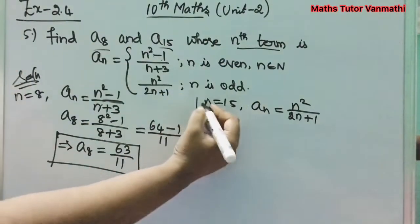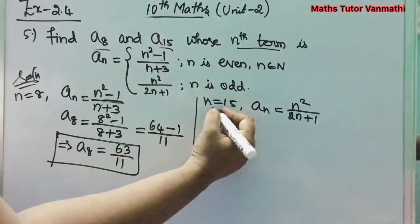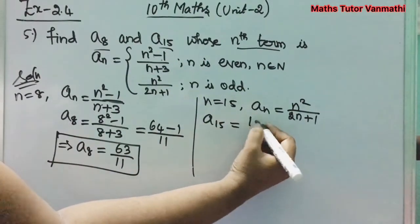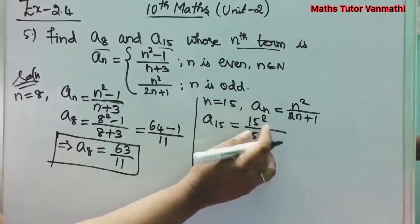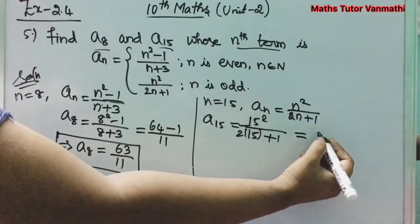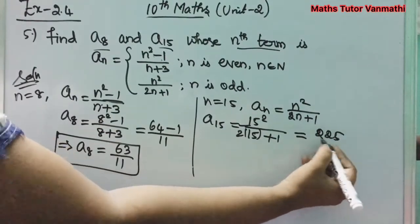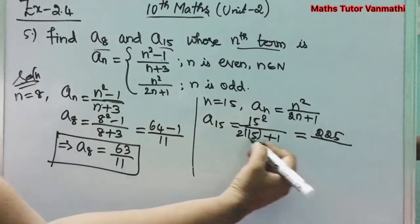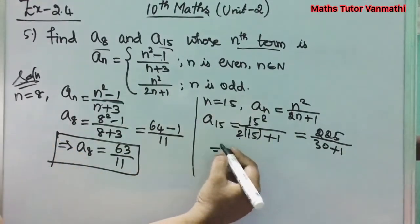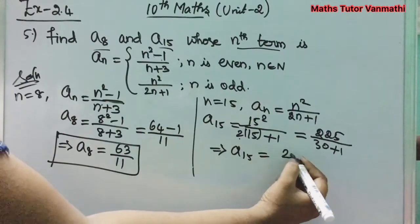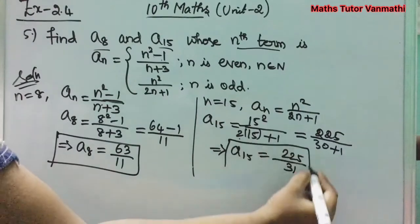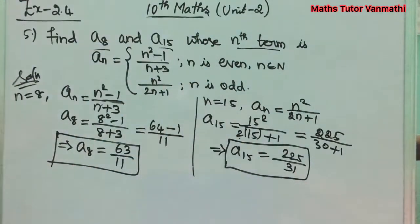Since n = 15 is odd, we use the odd condition. Substituting n = 15: a_15 = 15² / (2×15 + 1) = 225 / (30 + 1) = 225/31. So a_15 = 225/31.